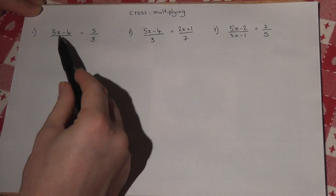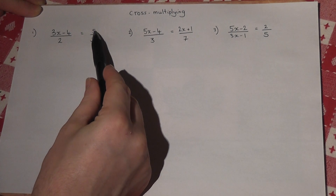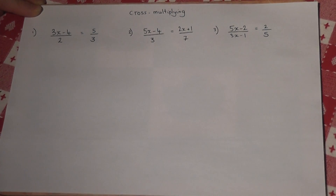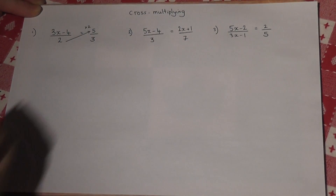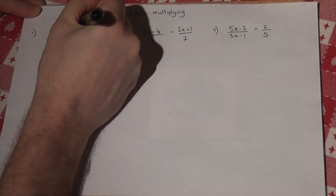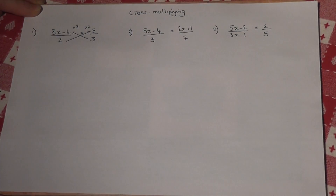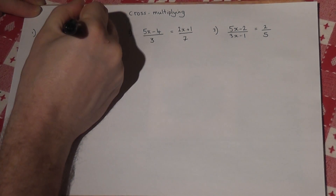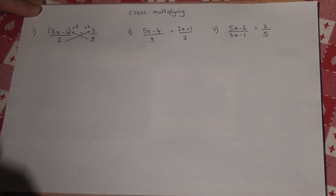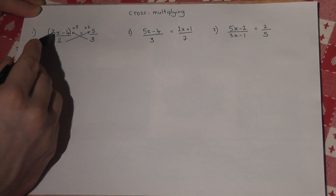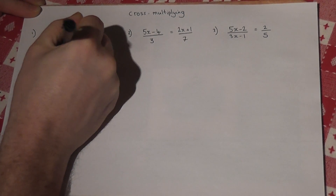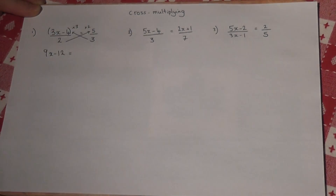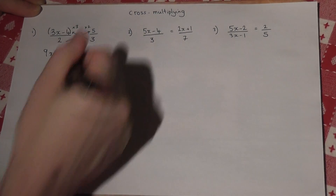It simply says that we times the other numerator by the other denominator. So I times that side by 2 and I times this side by 3. It helps if I place a bracket around the entire numerator. If I times this one by 3, I get 9x take away 12. And I've times that one by 2, so that equals 10.